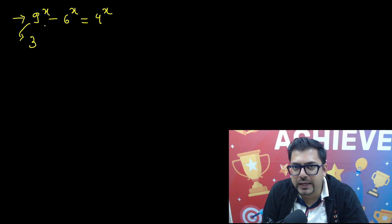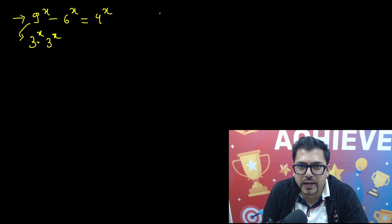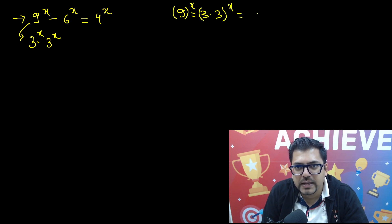We will write this 9 as 3 into 3, so that can be written as 3 raised to power x into 3 raised to power x. How did I write this? Because 9 can be written as 3 into 3. And if you write 9 into 3 into 3, 9 has a power of x, so this will have a power of x. And then we can write 3 raised to power x into 3 raised to power x because exponent has this distributive property.